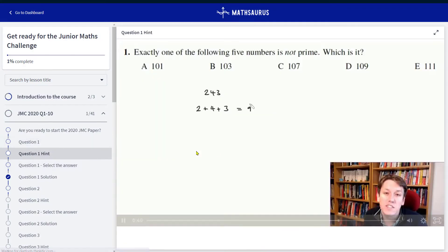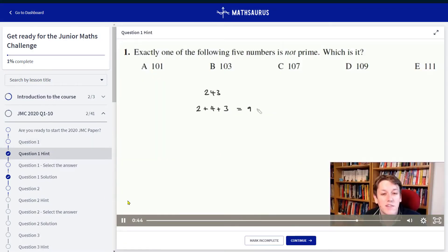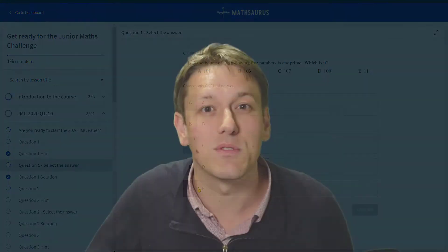I've also got a totally free course going through the Junior Maths Challenges from 2020 and 2021 if you haven't already seen that. If you haven't already taken the Junior Maths Challenge, the best place to start would be with the Junior Maths Challenge papers and then go on to the Kangaroo and the Olympiad papers once you're ready for them.